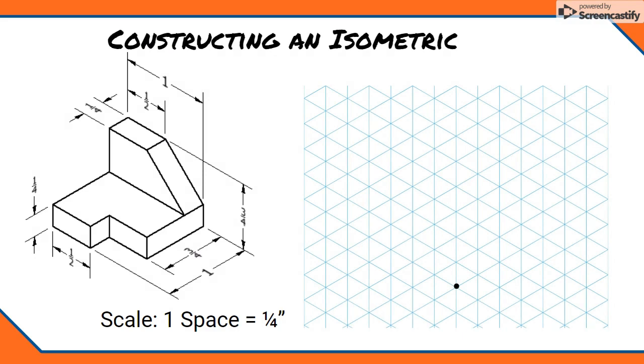Just like last time, I have a starting point placed on my isometric grid, and just like last time I'll be using a scale of one space to one quarter of an inch. But unlike last time, I'm not going to color code my width, depth, and height lines. To help with the extra details of this part, I'm first going to draw a simple box with the same overall dimensions as my object. This part is one inch wide, one inch deep, and three fourths of an inch high.